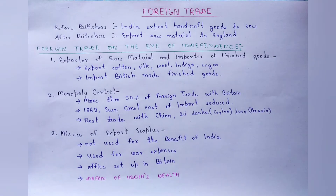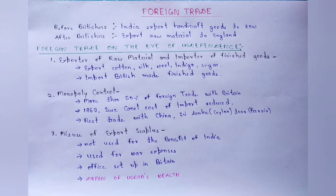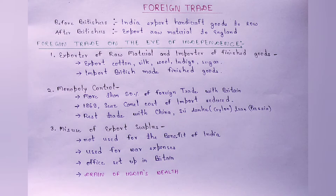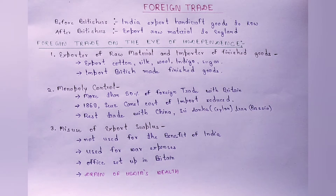The first feature is: exporter of raw material and importer of finished goods. The British transferred raw material from India to England and its industries.